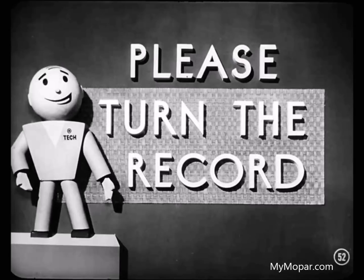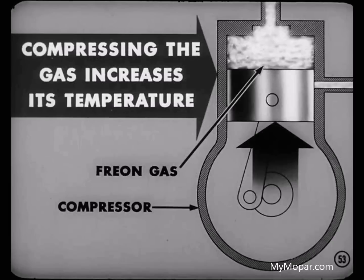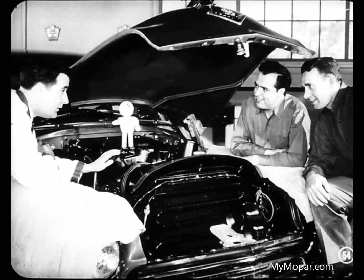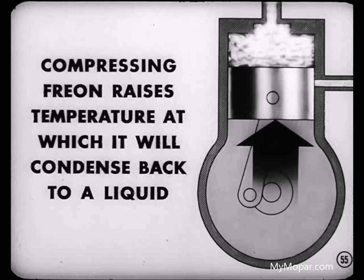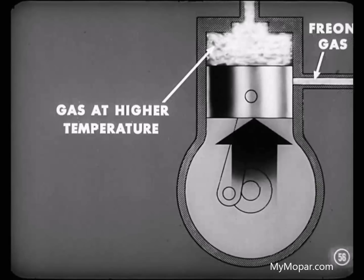Now we're all set. About that compressor, Bill — its job is to build up pressure on the Freon gas. Remember, by compressing a gas, we increase its temperature. In fact, the temperature of the Freon gas goes up so high it can be cooled at summer temperatures. And this brings us up to another phase in the operation of the system. Compressing the Freon raises the temperature at which it will condense back into a liquid, and this is done by the compressor.